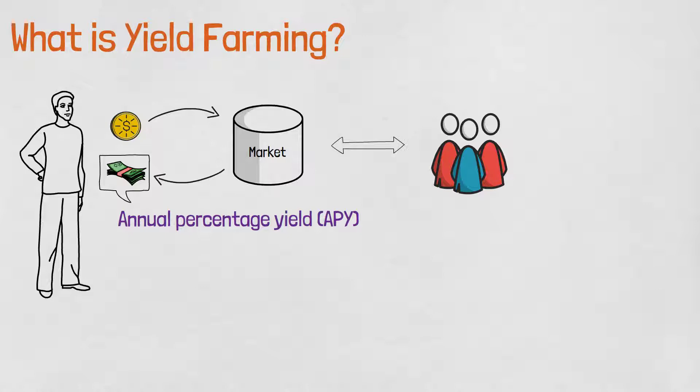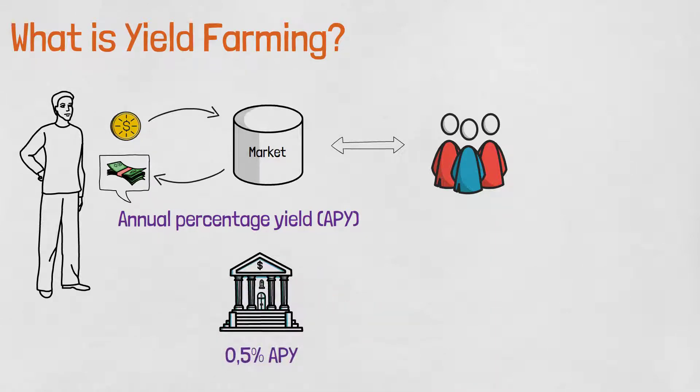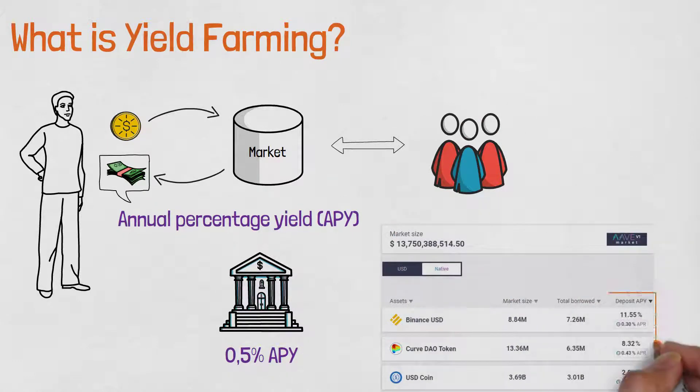You probably wonder how much APY can be earned. If you deposit your money in a savings account at a bank, you will earn somewhere around 0.5% APY. On the other hand, one of the popular lending platforms Aave offers up to 11%.